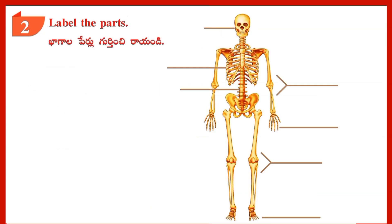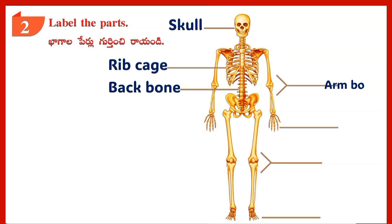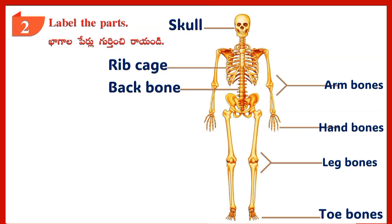Section 2: Label the parts — Skull, Ribcage, Backbone, Arm Bones, Hand Bones, Leg Bones, Toe Bones.